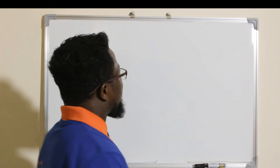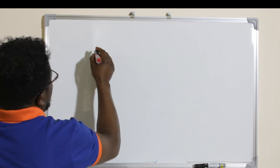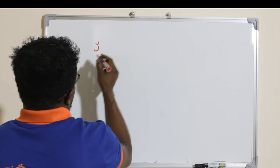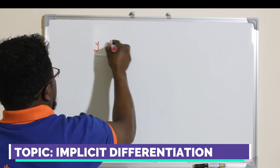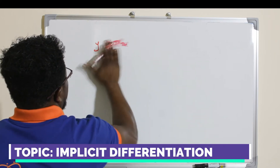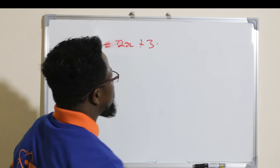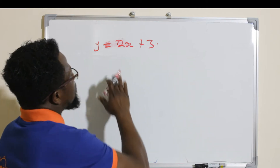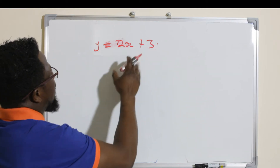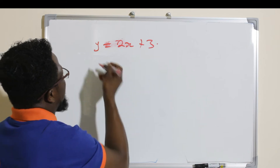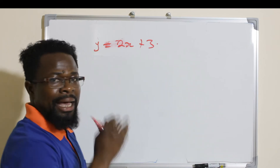When we look at this, if I write an equation such as y = 2x + 3, we can easily find the derivative of this function. We can easily take the derivative of y with respect to x explicitly.